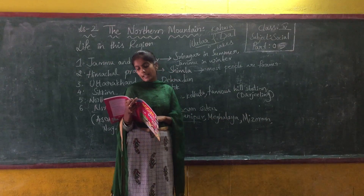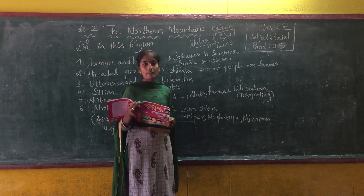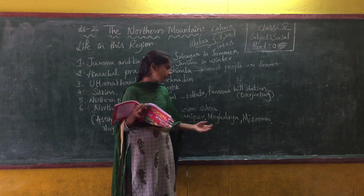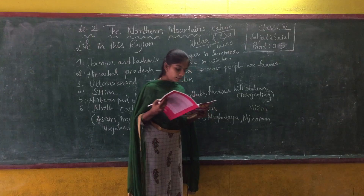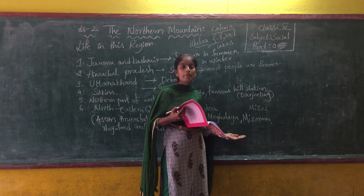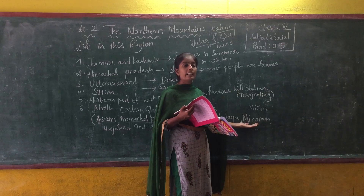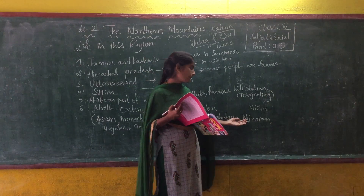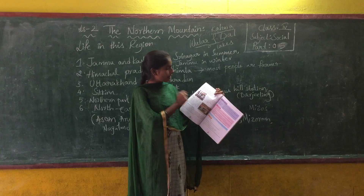Mizoram is a small state in the North East and is the smallest among the Seven Sisters. The capital of Mizoram is Aizawl. The people of Mizoram are called Mizos. Mizoram means the land of healthy people. The bamboo dance of Mizoram is very famous, and most of the Mizos are literate.